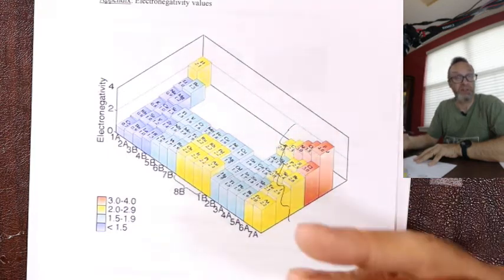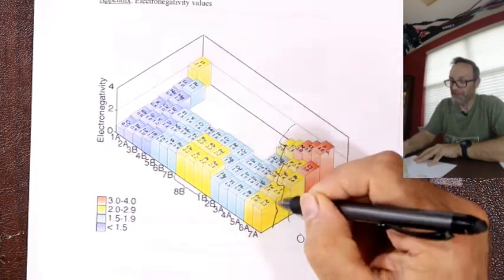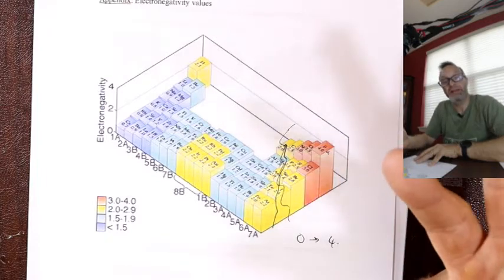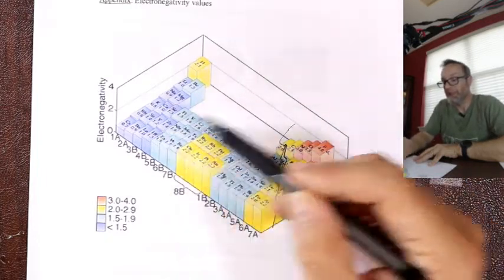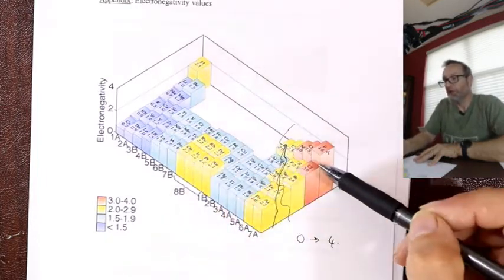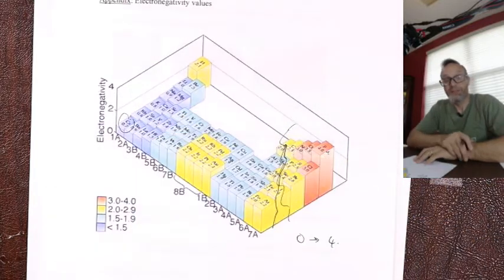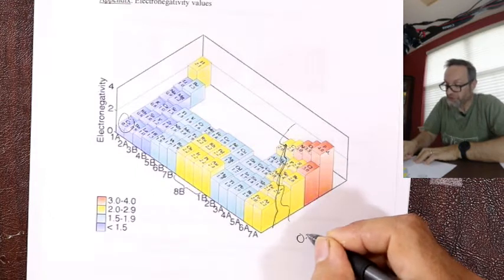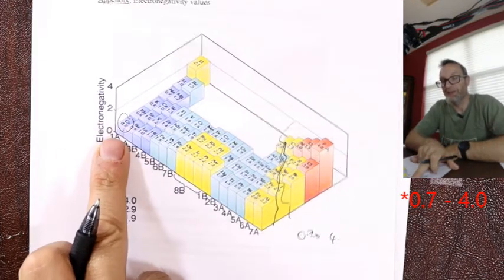Electronegativity only applies when you're bonded. Fluorine is the strongest. Then there's a dividing line — the same one between metals and non-metals. Metals are weak, non-metals are strong. The lowest strength is cesium at 0.7 — there's nothing with a zero, the actual range is zero to four. Cesium is the weakest.